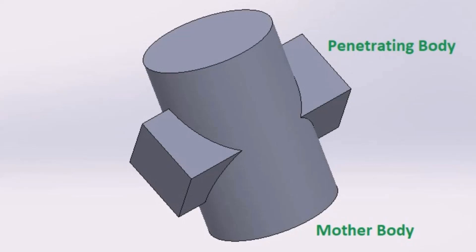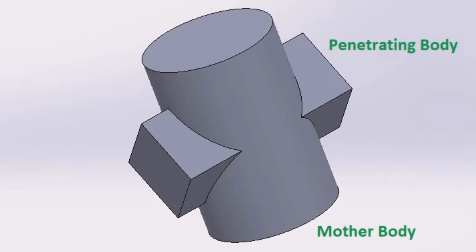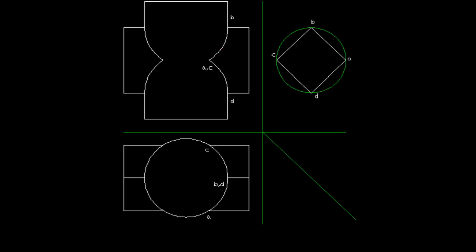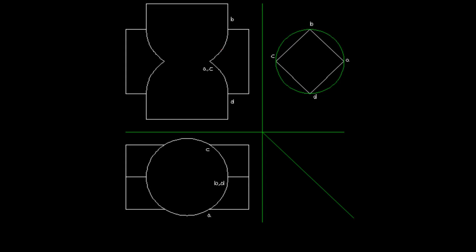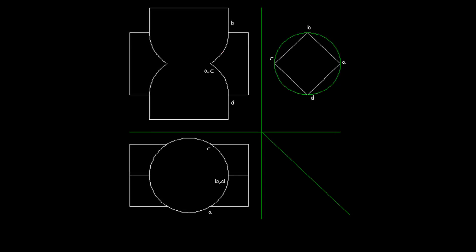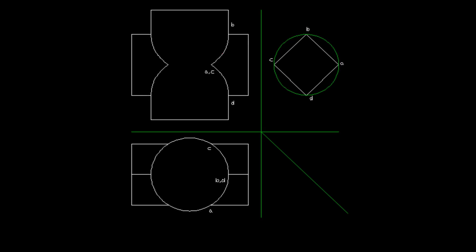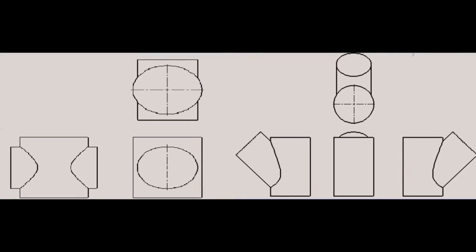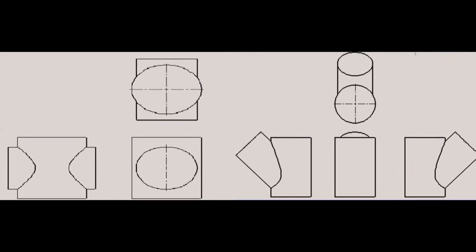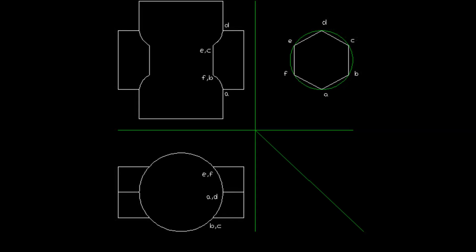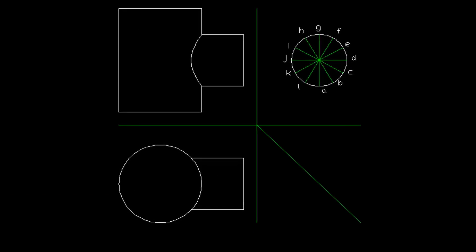The larger solid which we take as a reference is called the mother body, and the body which penetrates the mother body is called the penetrating body. In this example, we have a cylinder as a mother body and a square prism as the penetrating one. The penetrating body intersects the mother body at a right angle. Remember that the intersection curve for a right angle intersection would be different from intersections at other angles. This is an example of a right angle intersection.